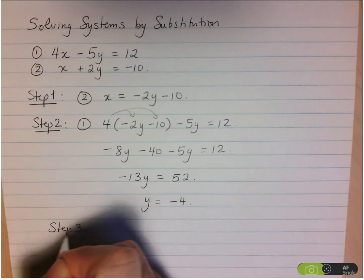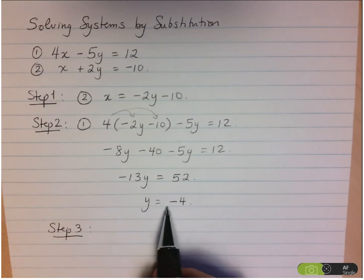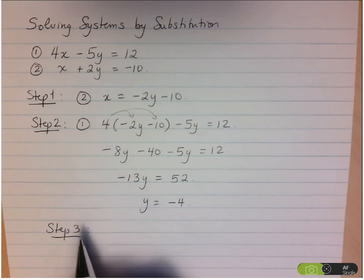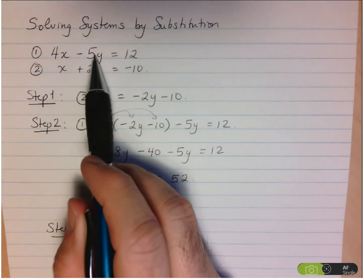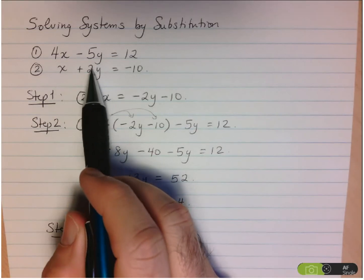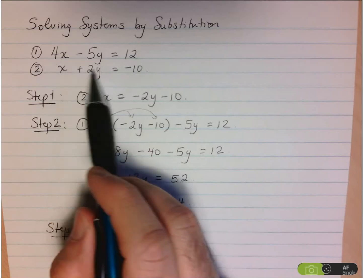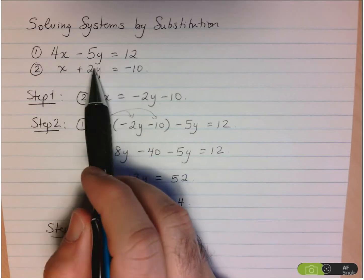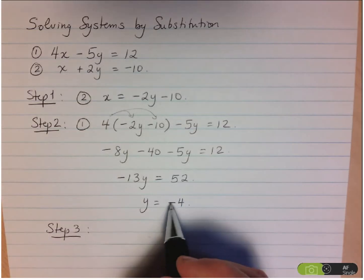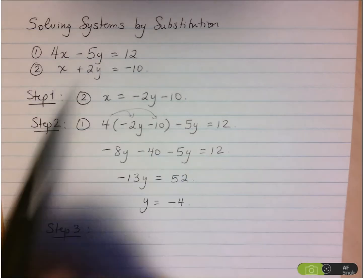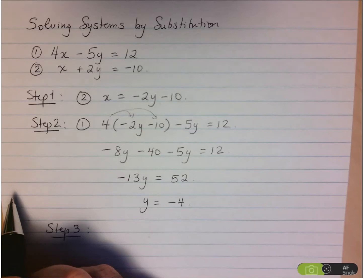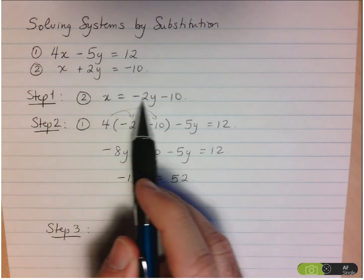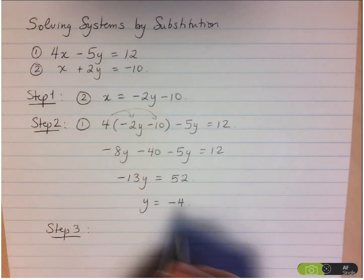So step 3 is to take this y value and substitute it into an equation to determine the x value. Now when you're solving a system of equations, you're finding the x and y that satisfies both equations. From a geometric perspective, we're finding the point of intersection between these two lines. That means the x and the y values are the same on both lines. So it shouldn't matter which equation we substitute this into. So the easiest one would be equation 2.